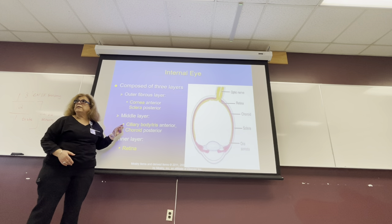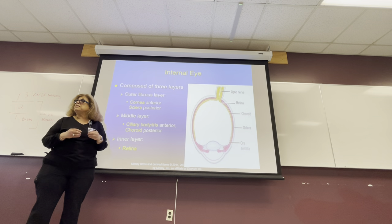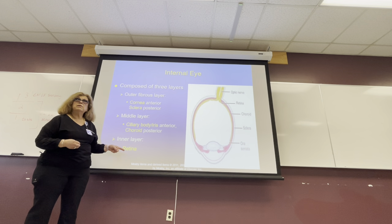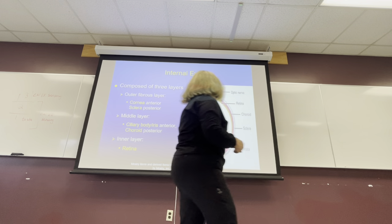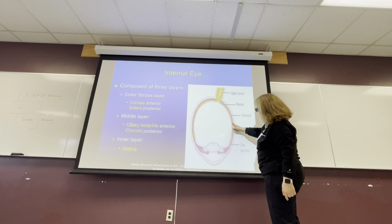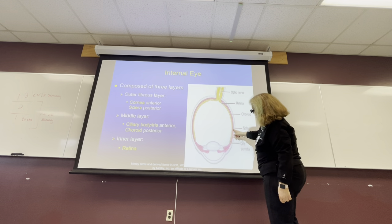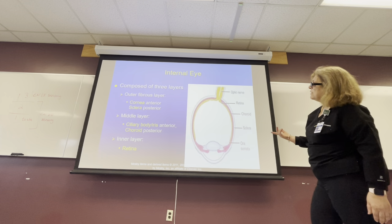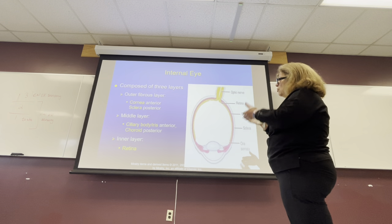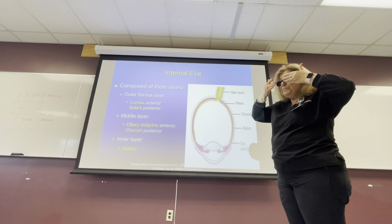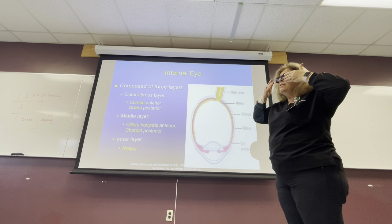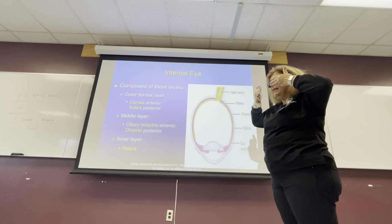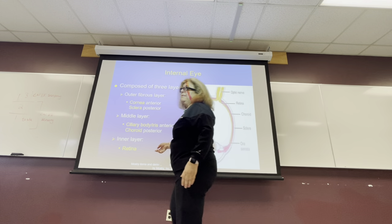The ciliary body is a muscle — it is responsible for opening and closing the pupil. The first layer is cornea and sclera. The cornea is covering the pupil, and the sclera is the white of the eye. The second layer inside has the iris, the ciliary body, and then posteriorly the choroid. The inner layer is the retina — we don't see it.